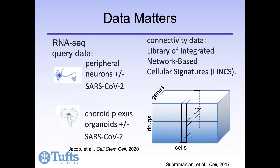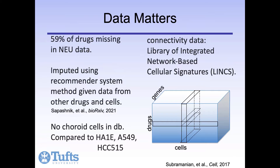For the database, we use not the original connectivity mapping data on microarrays, but the newer LINCS connectivity dataset that measures transcription of about a thousand genes via an assay known as the L1000. We use a subset of the data with about 1,300 drugs and 80 cell types, but the problem is that even this dataset is very sparse — about 75% of the cell-drug combinations are missing.